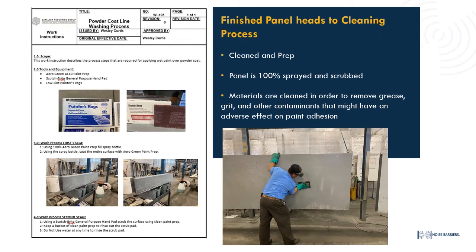All raw panels are then fork-trucked over to our powder coat line. We perform a three-stage wash and scrub on all exterior barrier wall panels: spraying with green paint prep, scrubbing with Scotch-Brite pads to remove grease, grit, and contaminants, then wiping dry. A QC check ensures everything has been removed — if the rag returns any debris, the panel is pulled from the line for a second cleaning. Nothing goes through the paint line that could prevent the powder coat from adhering. Panels are then hung on the line using the lifting pockets for coating.